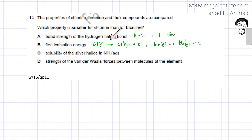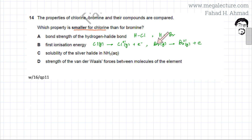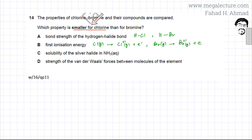There are fewer electron shells in chlorine, so the shielding effect is lesser as well. In the case of bromine, the electron is much further from the nucleus and the shielding effect is greater, making it easier to remove an electron. So ionization energy is greater for chlorine, not smaller — option B is also incorrect.